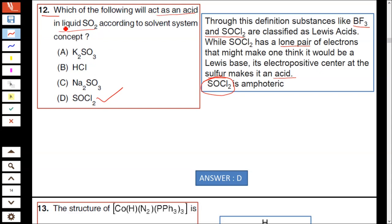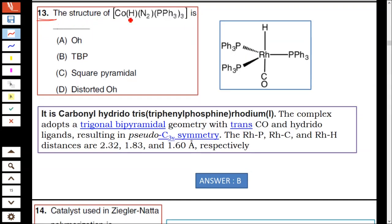Question number 13: The structure of Co(H)(N₂)(PPh₃)₃. Here cobalt complex contains CoH, PPh₃, PPh₃, PPh₃, and N₂. Hence it is a five-coordinated complex. It is a cobalt hydride complex. The complex has a trigonal bipyramidal structure having C₃v symmetry.